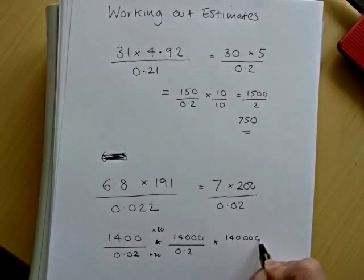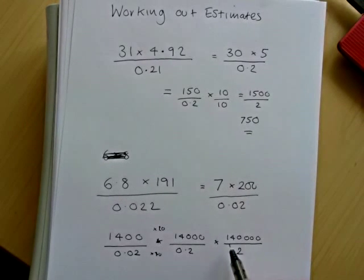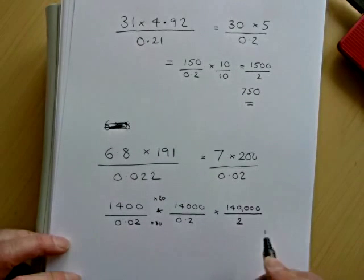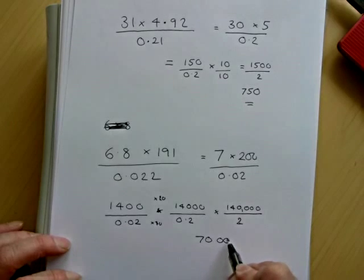We now have 4 noughts, but we've got that into 2. So we've got 140,000 needs to be divided by 2. So the answer is 70,000.